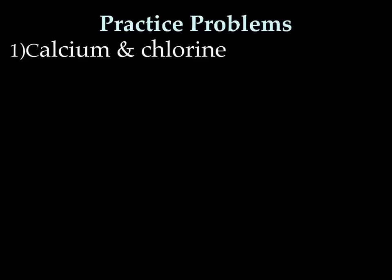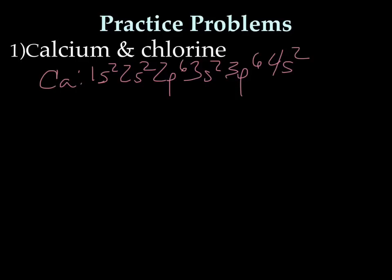All right, so for number one, we have calcium and chlorine. Calcium's our metal, so we'll start with that. And calcium is 1s2, 2s2, 2p6, 3s2, 3p6, 4s2. Because he's a metal, he becomes an ion by losing. He lost two electrons, so he's going to be Ca2+.